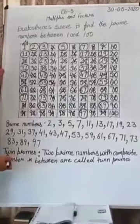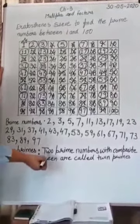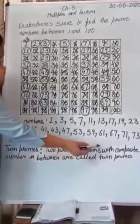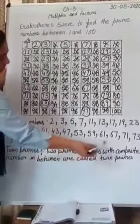Now I will explain twin primes. What is the meaning of twin primes? Two prime numbers with a composite number in between are called twin primes.